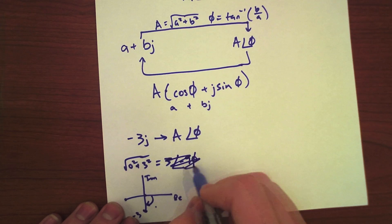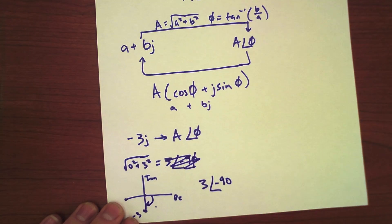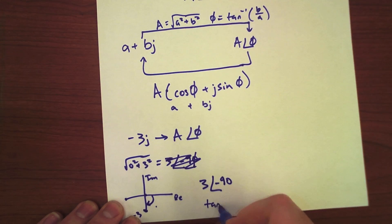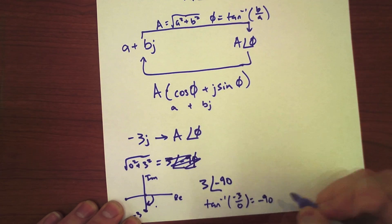3 angle minus 90. And we can also know that because the tangent inverse is minus 3 over 0 is minus 90 degrees.